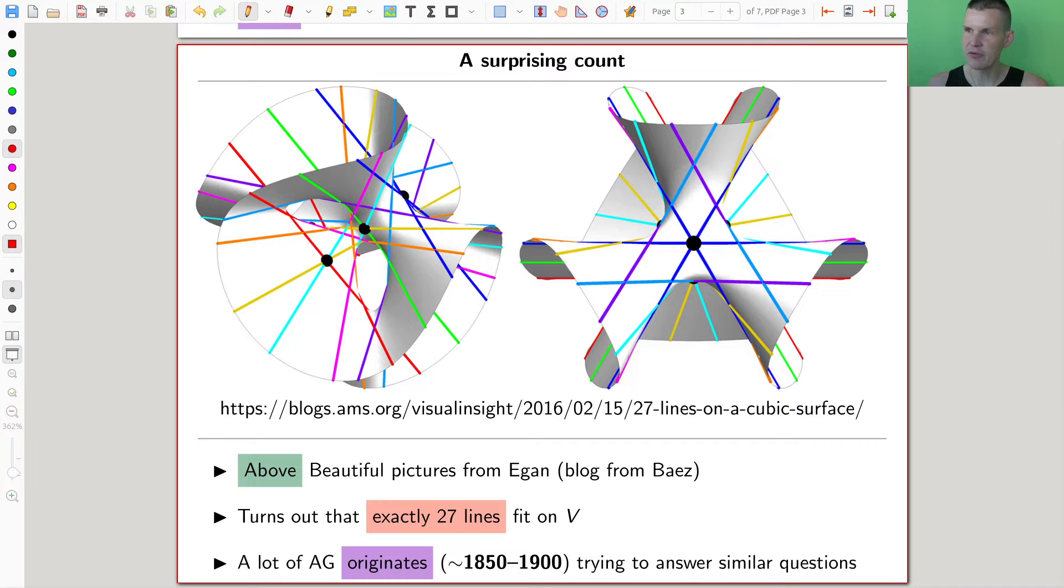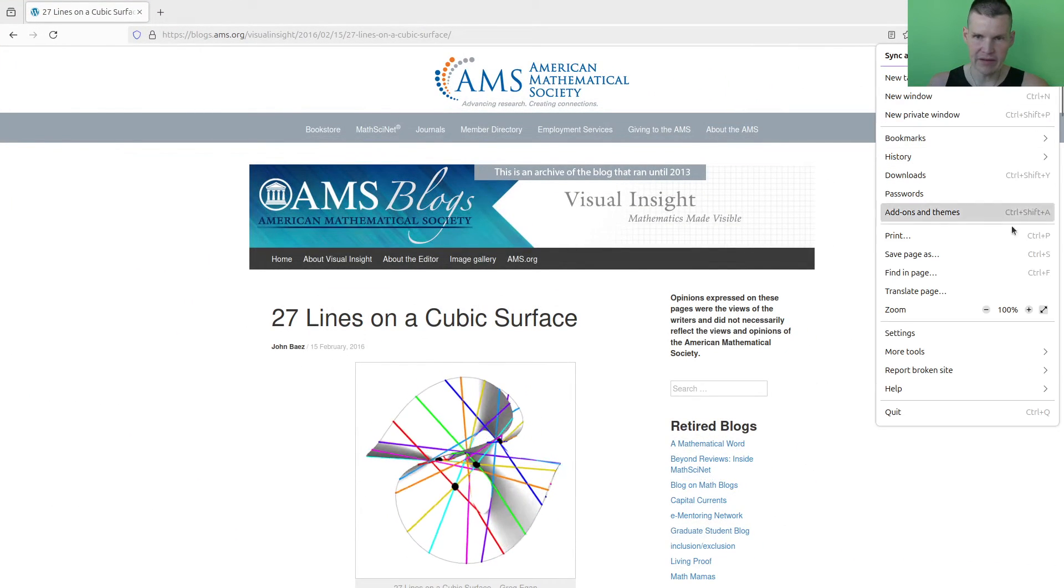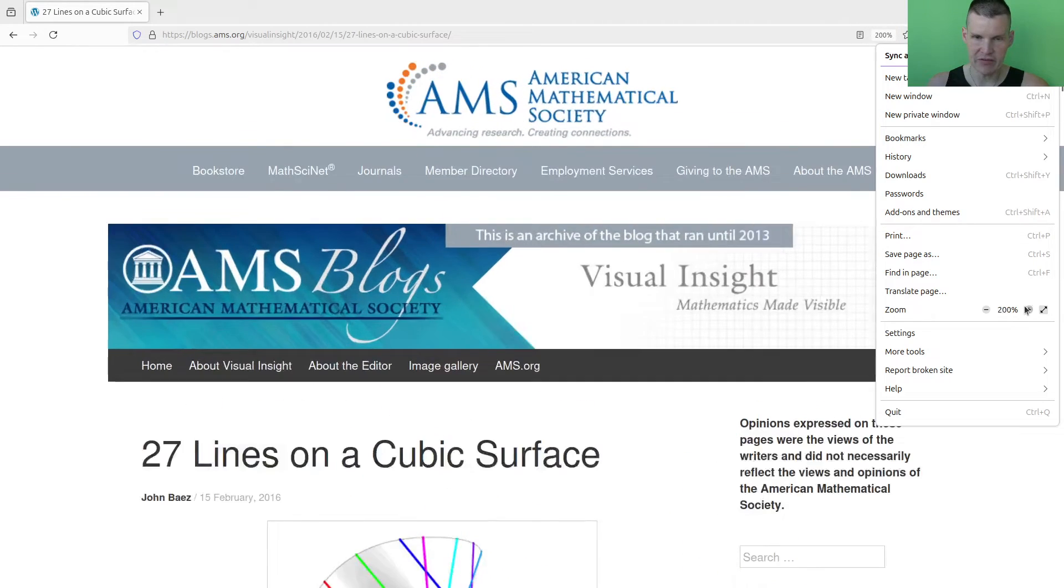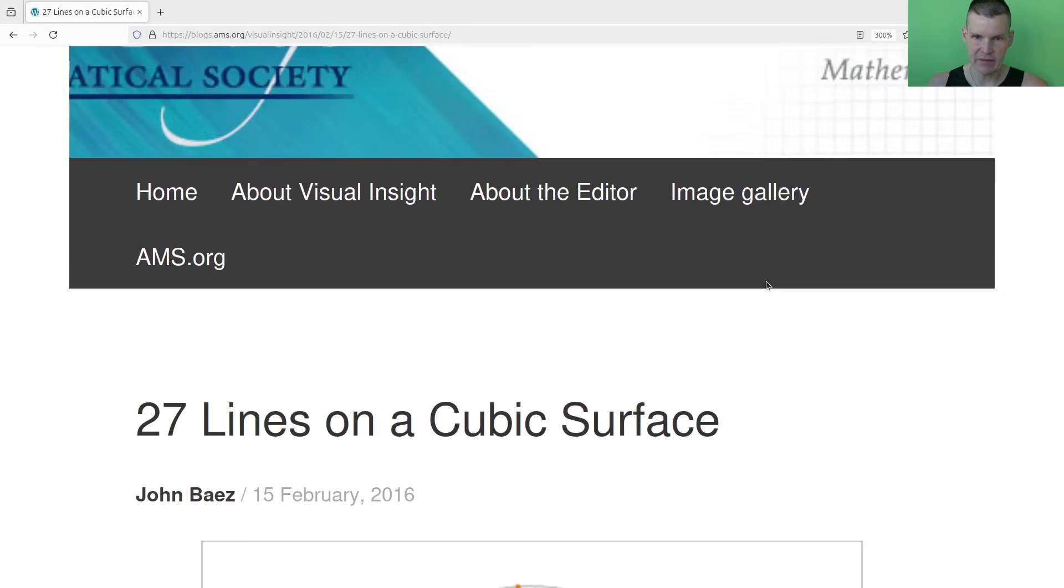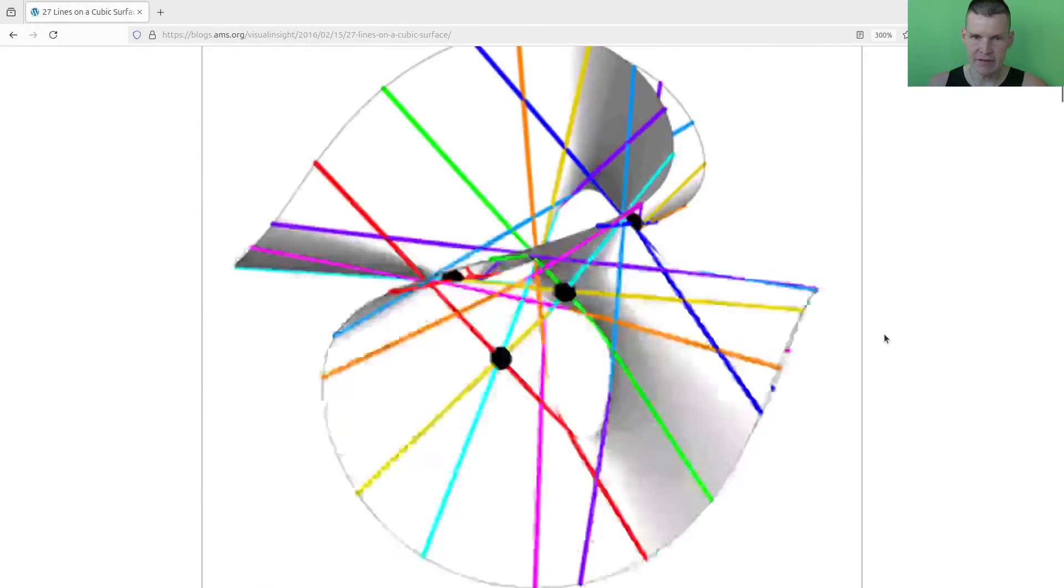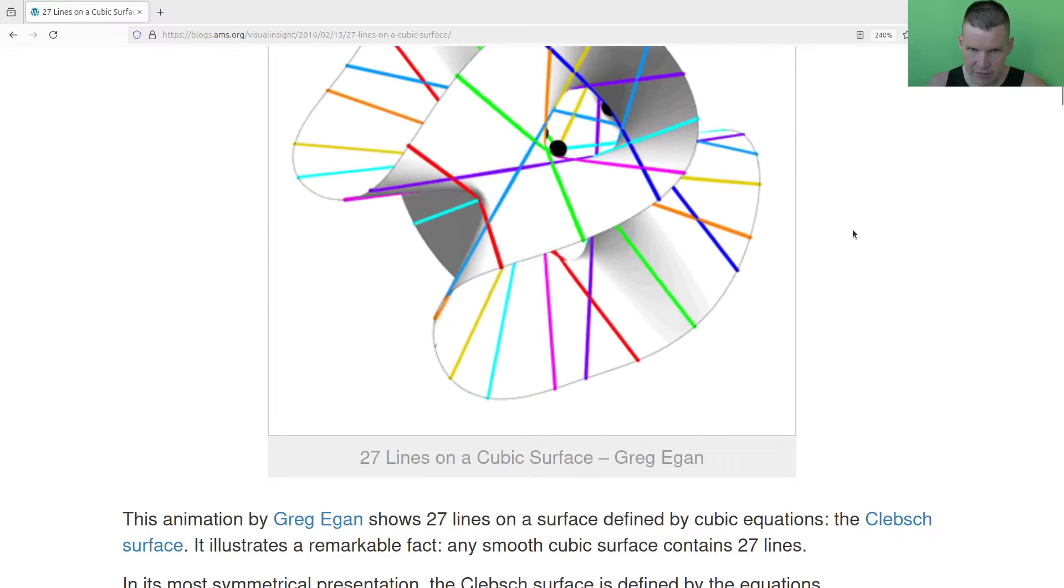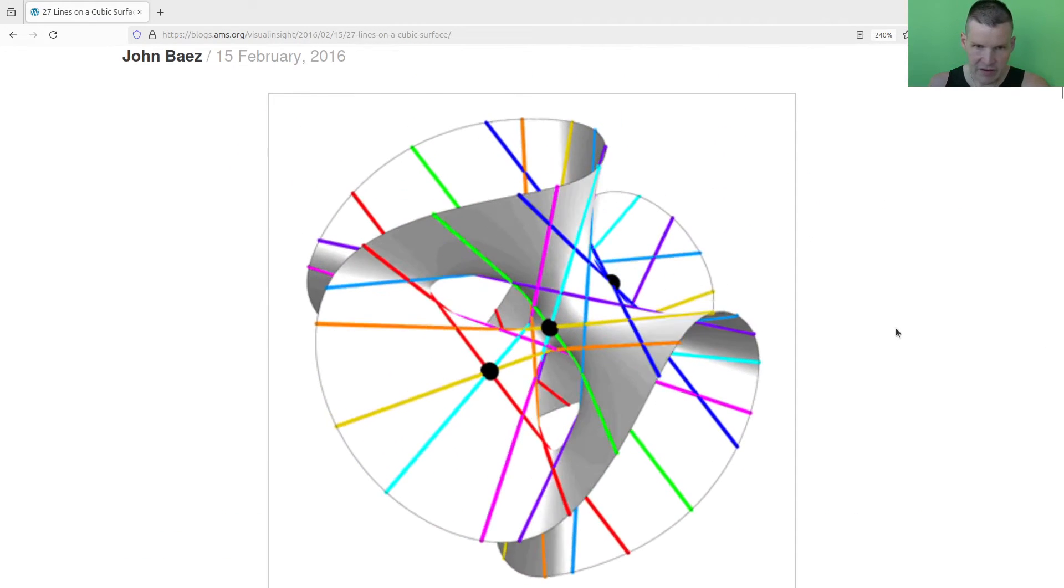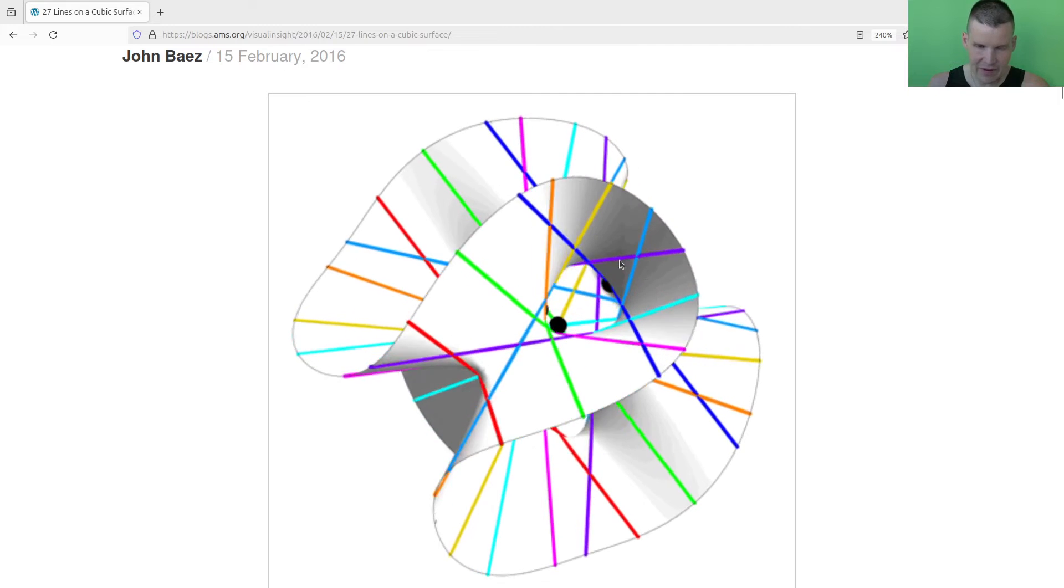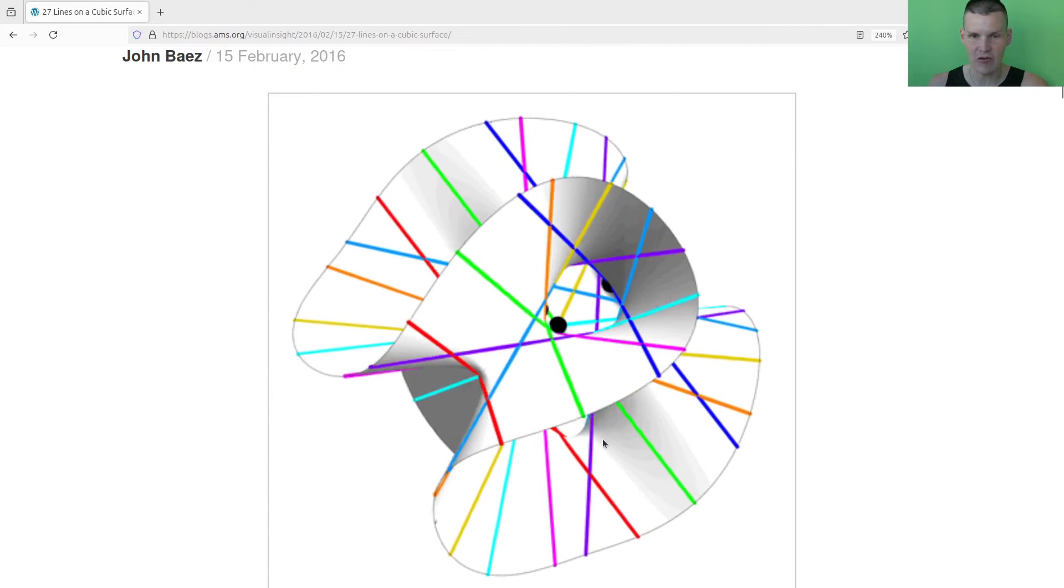So here is this beautiful blog of John Baez, and the beautiful animation, I see that in a second a bit nicer, of Greg Egan. So here's our surface, exactly the same as before. Maybe I make it a little bit smaller, so it fits on nicely on one page. And you can see those lines. And it's very surprising that you can actually fit straight lines on such a curvy surface.